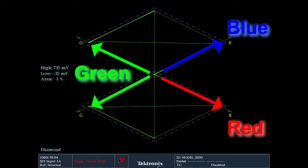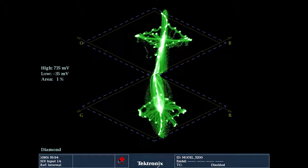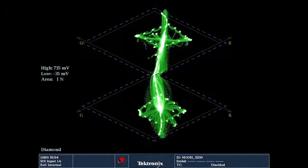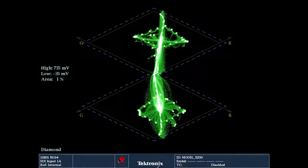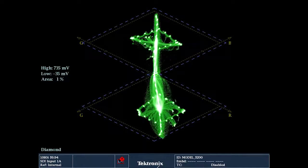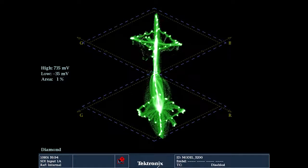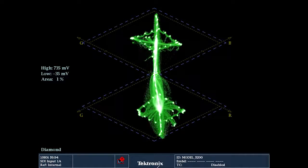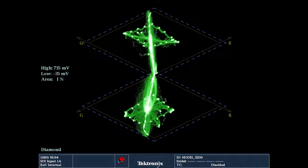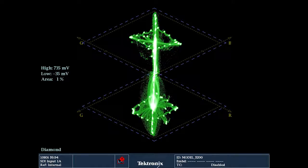With the Tektronix diamond display, you can easily determine which RGB component needs to be adjusted. In the upper diamond, adjust the blue component for a camera to balance the signal and keep within limits. For errors in the lower diamond, adjust the red component. Adjusting the green component affects both the upper and lower diamonds.